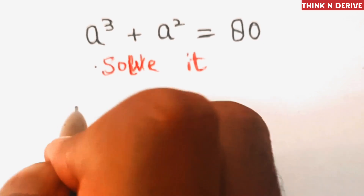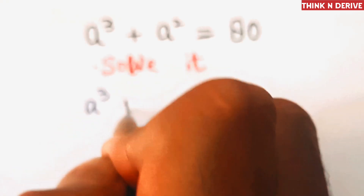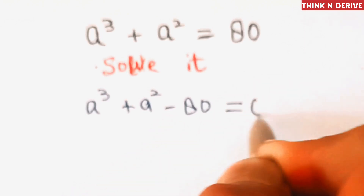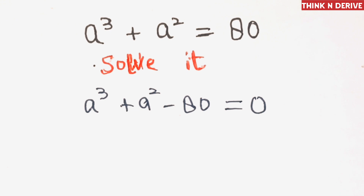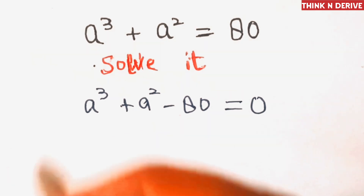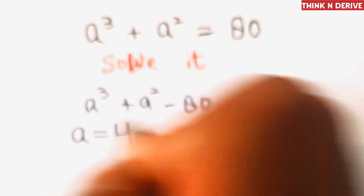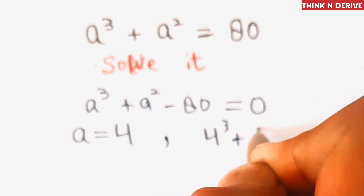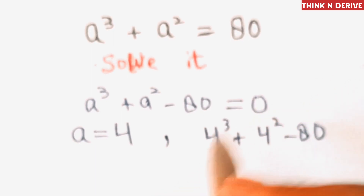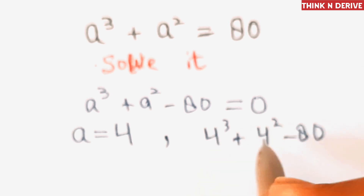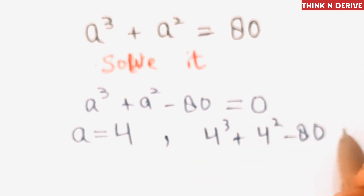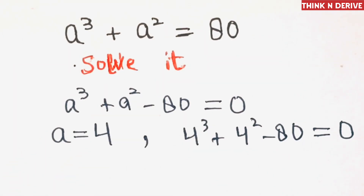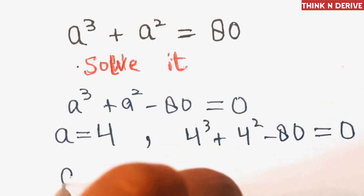In the first step, we'll bring 80 to the left-hand side, so this equation becomes a³ + a² − 80 = 0. We'll guess here to find one of the solutions. If a = 4, this equation becomes 4³ + 4² − 80, which equals 64 + 16 − 80 = 0. So one solution of this equation is a = 4.